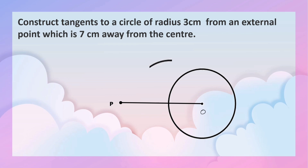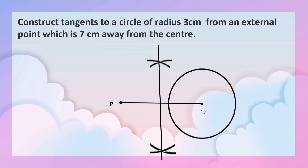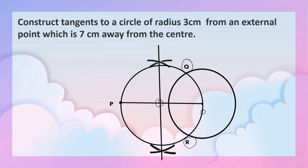Now draw arcs and bisect the line OP. Taking this midpoint as a center, draw another circle which cuts the former circle at Q and R. Now join PQ and PR. Here PQ and PR are the tangents.